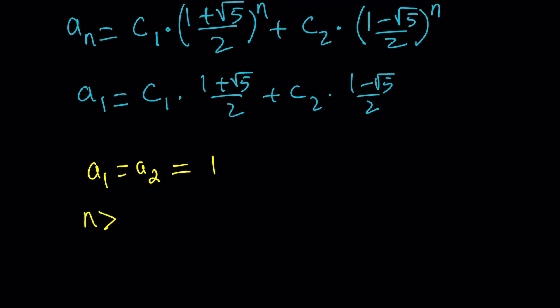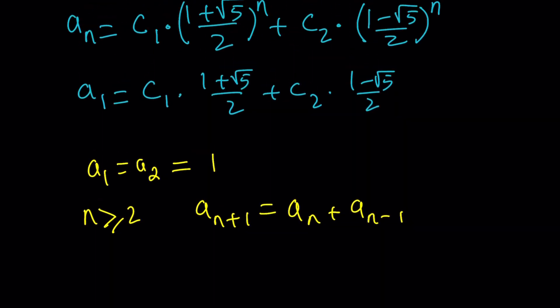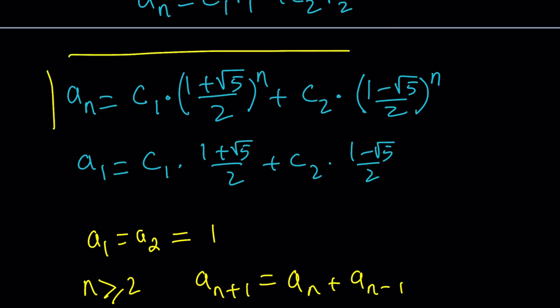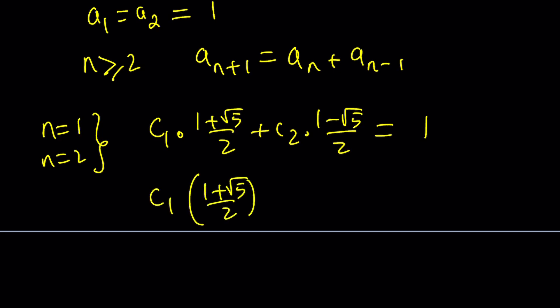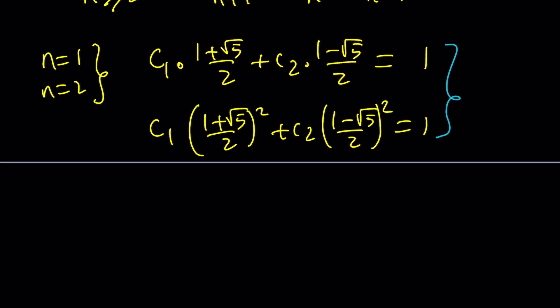And we also had for n greater or equal to 2, we had a n plus 1 equals a n plus a n minus 1. In other words, you take the two consecutive terms, add them up, that gives you the next term. That's going to look familiar to you in a little bit. Now, if I go ahead and set up two equations, since I know the first two terms, replace n with 1 and n with 2, then that would give me c1 times 1 plus root 5 over 2 plus c2 times 1 minus root 5 over 2 equals 1. And then if you replace n with 2, we're going to square the same constants, and this time it's still going to be 1. So this gives us a system of two equations, and this is a linear system because it's a system in c1 and c2.